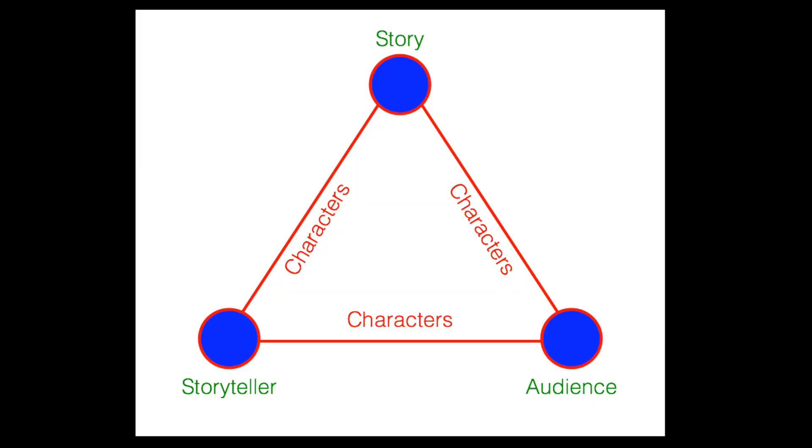We're going to talk about the importance of character development to the story itself, and then we're going to discuss the importance of conflict to the story, and then how to develop characters through the context of the characters' lives and their backgrounds and things like that, and within the context of the conflict. Characters are going to connect audiences to the story — that's what characters do. There's this triangle of audience, story, and storyteller, and the characters form the connections between those three points on the triangle.